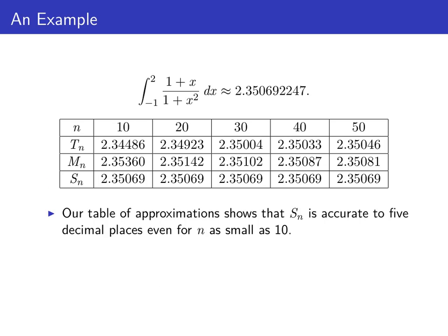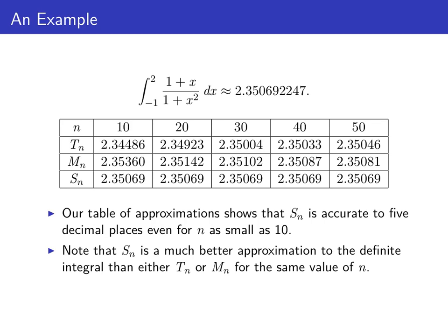Returning back to the table of approximations we made, we can see that the Simpson's rule approximation is accurate to five decimal places even using as few as 10 subintervals. We should also note that the Simpson's sum approximation is much more accurate than either the trapezoid or the middle sum approximations using the same value of n.